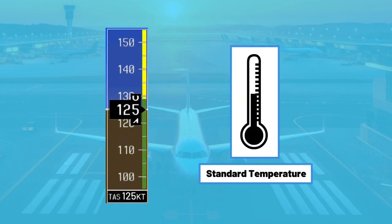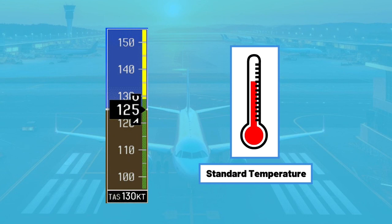As a pilot, indicated airspeed and ground speed are most useful when flying, but it's important to understand how true airspeed is affected by temperature because it affects your performance and ground speed. When temperature is colder than standard, your true airspeed decreases — for example, a change from 125 indicated to 120 true airspeed. When the temperature is warmer than standard, your true airspeed increases — for example, from 125 indicated to 130 true airspeed. A decrease in temperature equals a decrease in true airspeed because air density has increased, and an increase in temperature equals an increase in true airspeed because air density has decreased.